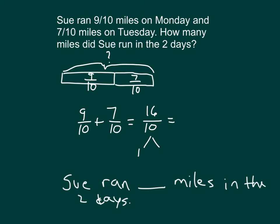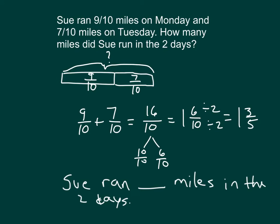Decomposing that, that's 10 tenths along with 6 tenths. So that's 1 and 6 tenths, which we can also simplify to 1 and 3 fifths. So Sue ran 1 and 3 fifths miles in the two days.